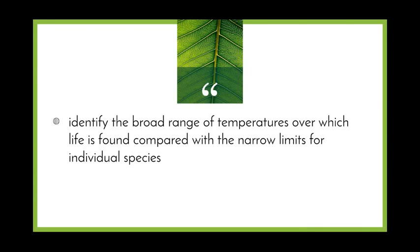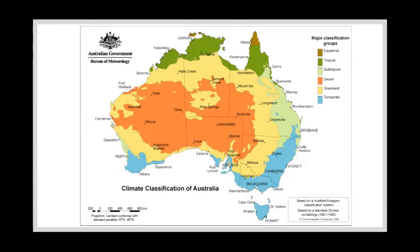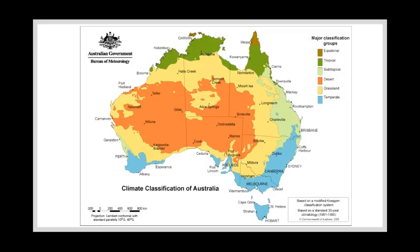Starting with the first dot point: identify the broad range of temperatures over which life is found compared with the narrow limits for individual species. Living in Australia, we have quite a diverse range of temperature environments. These range from equatorial areas towards the north — very hot and humid — through to temperate areas in the south, which have cooler winters and warmer summers, with the most diverse temperature range over monthly periods. Deserts can see massive variations in temperature over a 24-hour period.